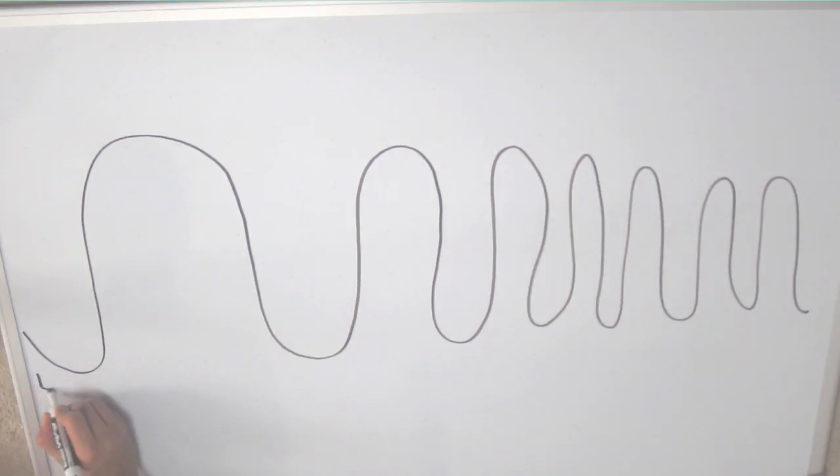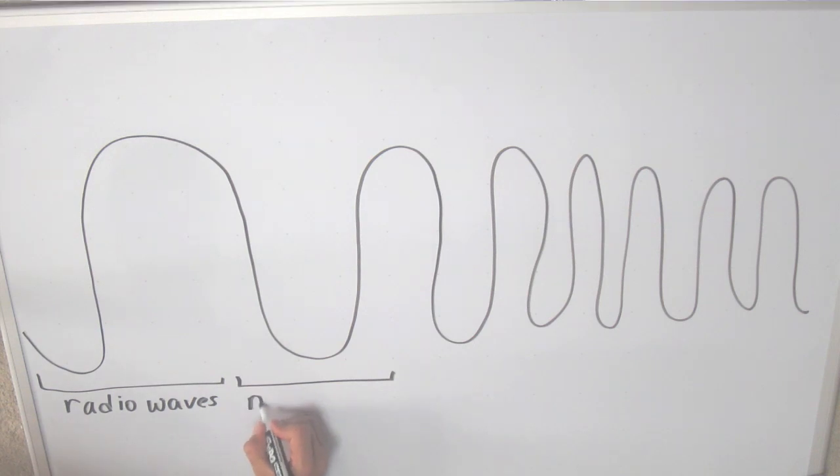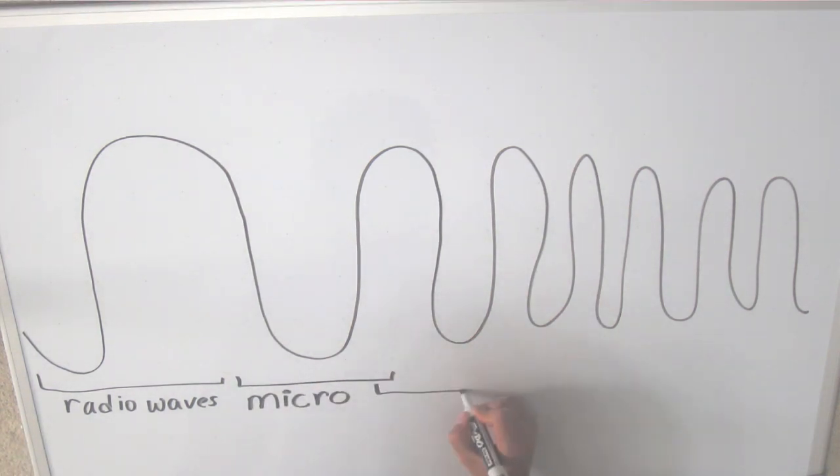So as you might know, in science we have our electromagnetic spectrum. There are seven types of waves on the electromagnetic spectrum.